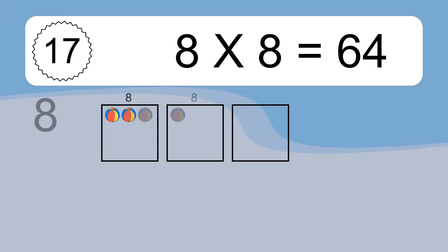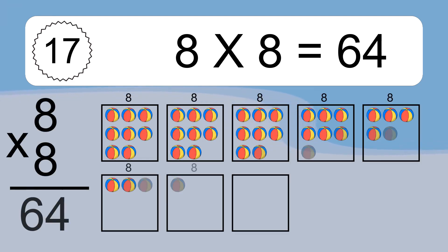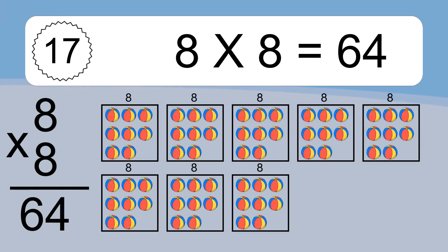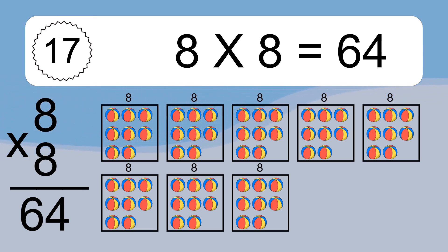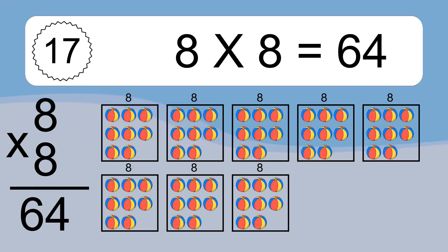8 times 8 equals what? 8 times 8 equals 64. We have 8 boxes and each box has 8 colorful balls inside. If you count all the balls in all the boxes together, you will have 8 times 8 balls. This equals 64 balls.